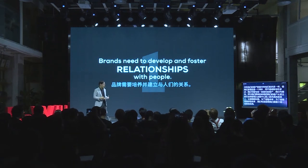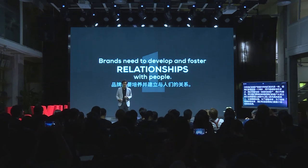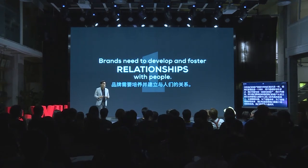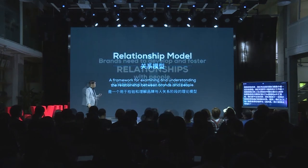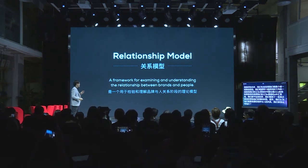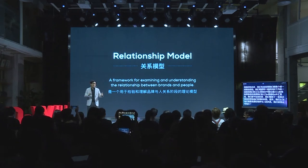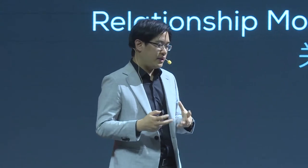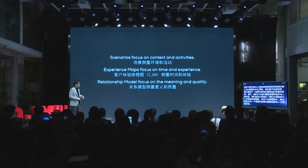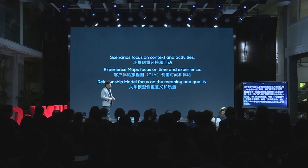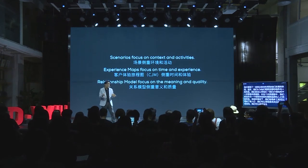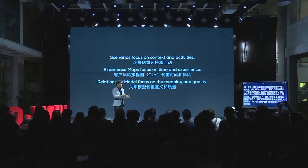For X-thinking, we're pushing and helping clients develop in several areas. First, we think they need to develop and foster relationships with people. One of the things we've introduced is a relationship model — a framework for examining and understanding the relationship between brands and people. We have many tools to understand people: scenarios focus on context or activities, experience maps focus on time and experience. But the relationship model focuses on the meaning between people and the brand, as well as a measurement of the quality of the relationship.